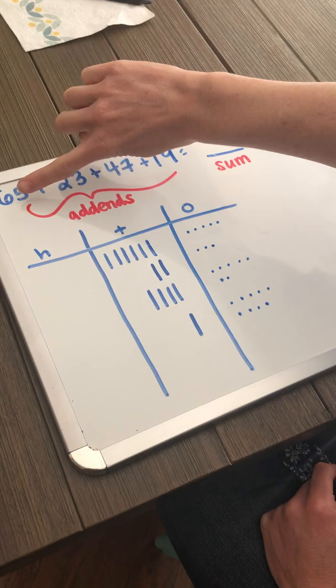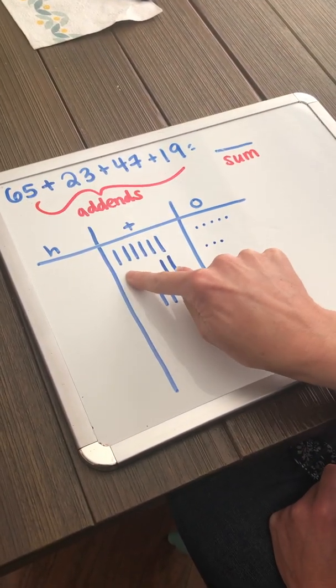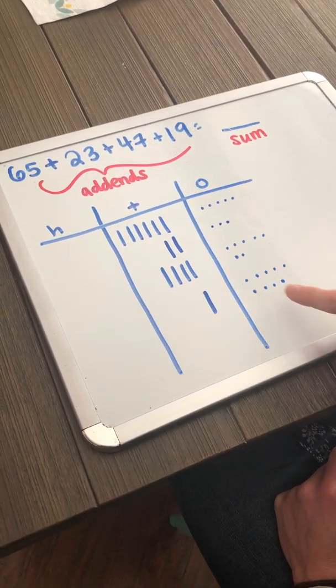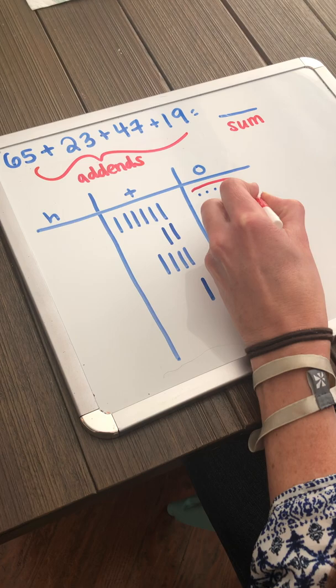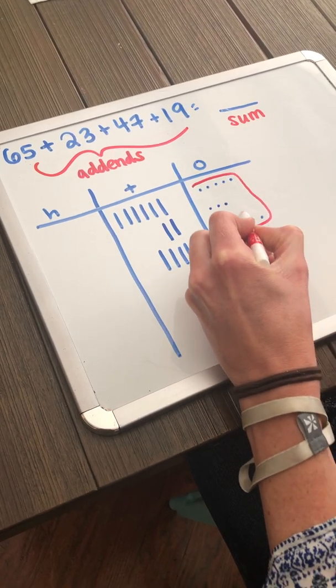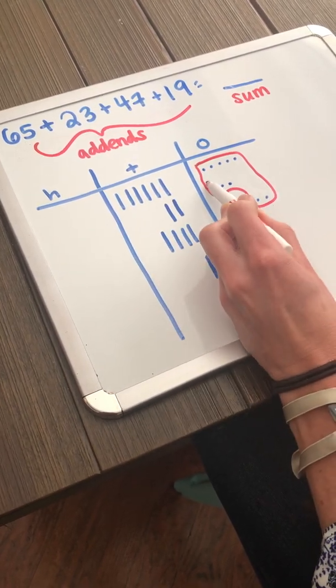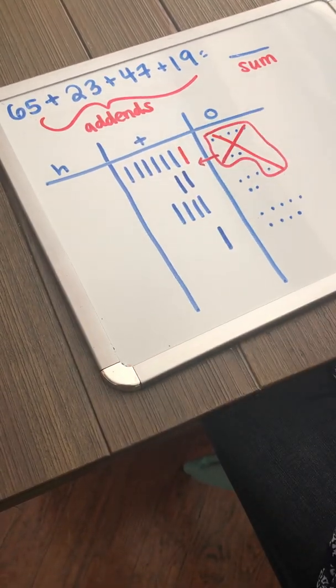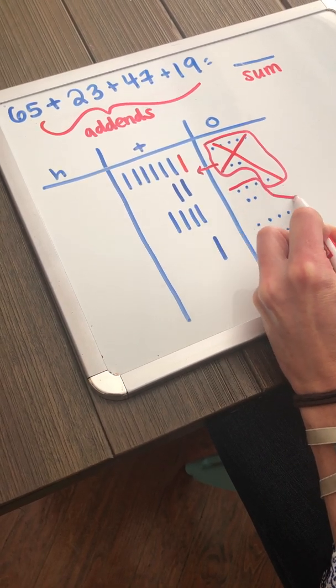Let's do this with drawings. Here are my addends. I had 1, 2, 3, 4 addends. And I'm looking for my sum. I represented 65, 23, 47, and 19. Now, I'm going to bundle my ones together to make groups of 10. Here is a group of 10 ones. 1, 2, 3, 4, 5, 6, 7, 8, 9, 10. And I can exchange it for another ten. I've got to cross out my ones.